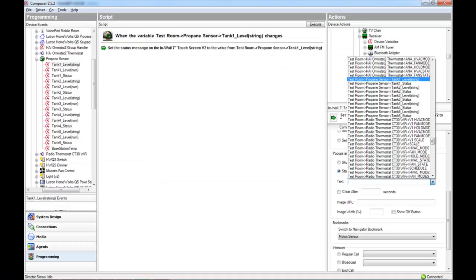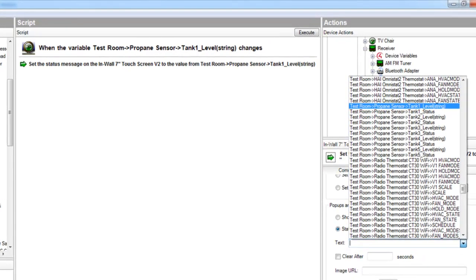Let's go over some programming examples for the propane sensor. In this example, we have programmed a status message to show the current tank level on a 7-inch touchscreen.